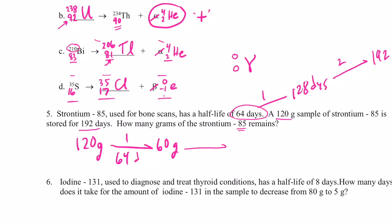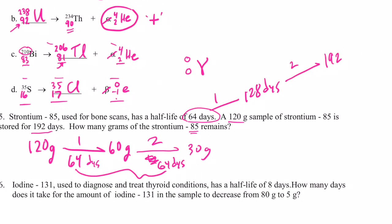And then, let's put days there. I almost messed that up. After another 64 days, I'll have 30 grams left. So that's two half-lives. So that's a total of 128 days so far. And after another 64 days, so now I have a total of 192 days, I'll have 15 grams remaining. Okay?